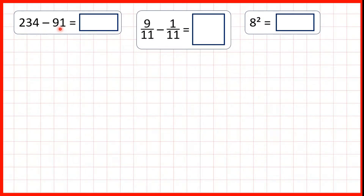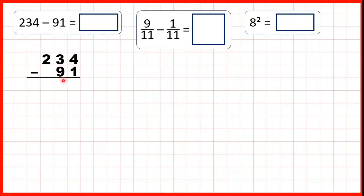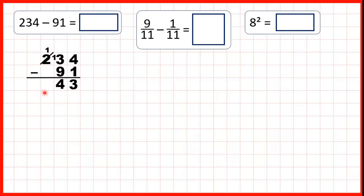234 minus 91. So, we can set this out as a column subtraction, making sure that we've got our place values lined up. Now, 4 minus 1 is 3. We can't do 3 minus 9, so we go to the left, 1 less, 1 in front. 13 minus 9 is 4. And 1 minus nothing is 1. So, our answer is 143.